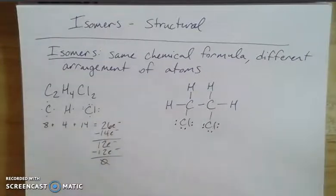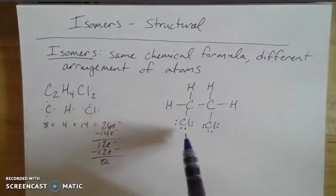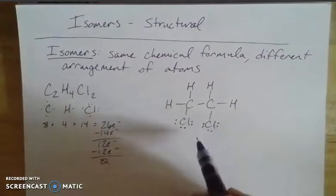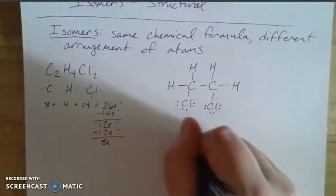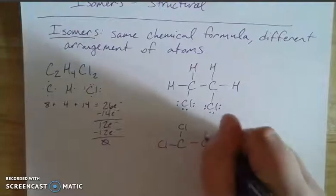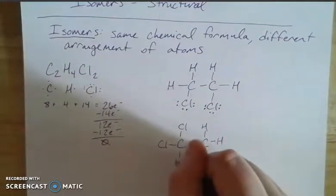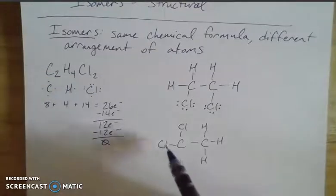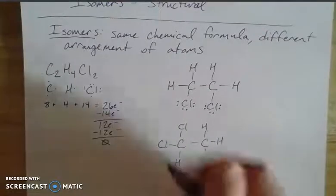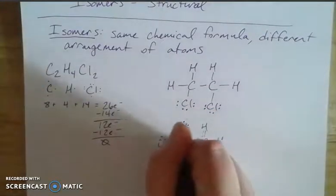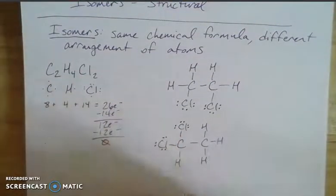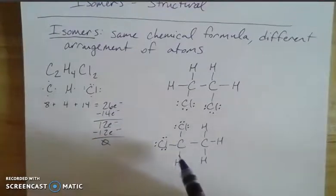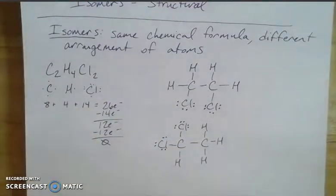So here's a valid Lewis structure — uses all electrons, has all the component pieces, everyone looks happy. But there's another way to put it together: instead of one chlorine on each carbon, I could put both chlorines on the same carbon. If I redraw it with both chlorines on one carbon, then add the hydrogens and lone pairs, this is also a valid Lewis structure with the same valence electrons and same component pieces — but the chlorines are in different positions.